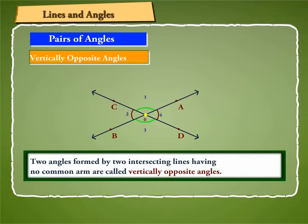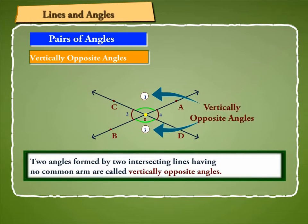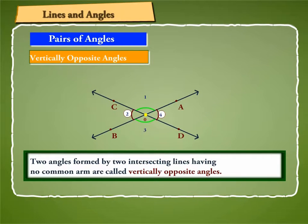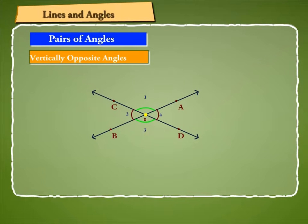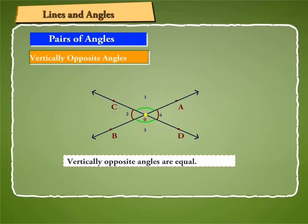Two angles formed by two intersecting lines having no common arm are called vertically opposite angles. In this figure, angle 1 and angle 3 is a pair of vertically opposite angles. Similarly, angle 2 and angle 4 form a pair of vertically opposite angles. By measuring them, we can verify that angle 1 is equal to angle 3 and angle 2 is equal to angle 4. Thus, vertically opposite angles are equal.